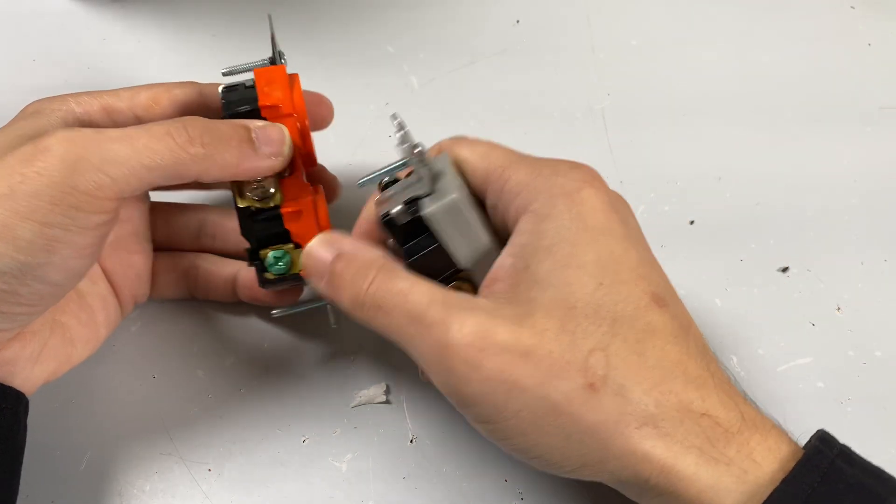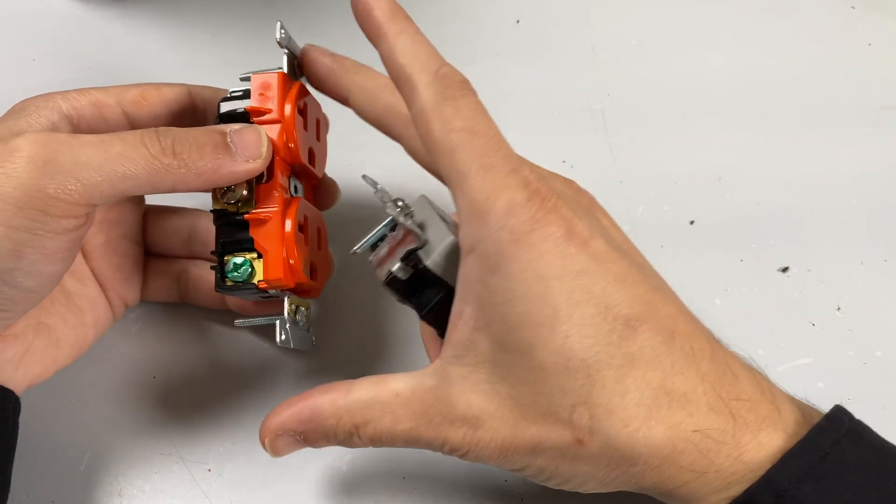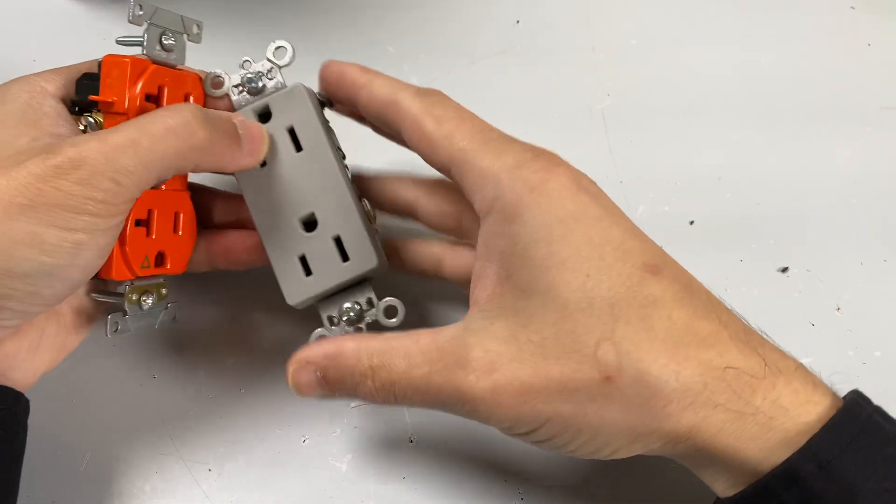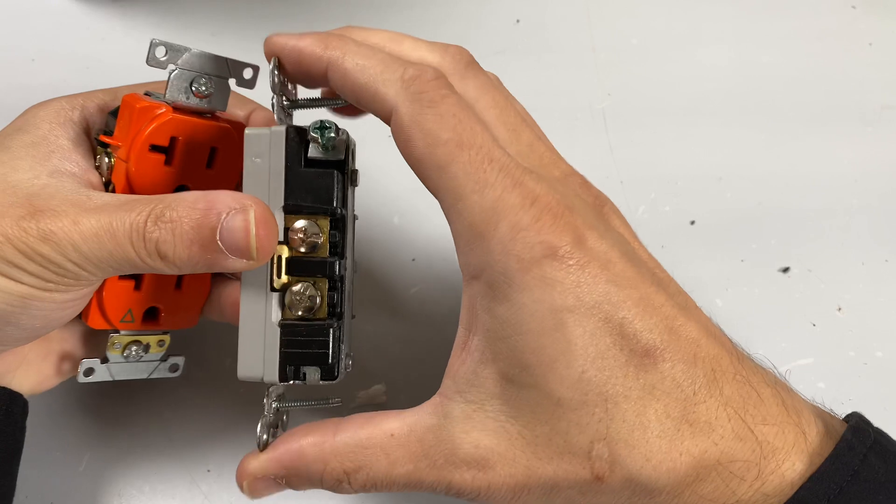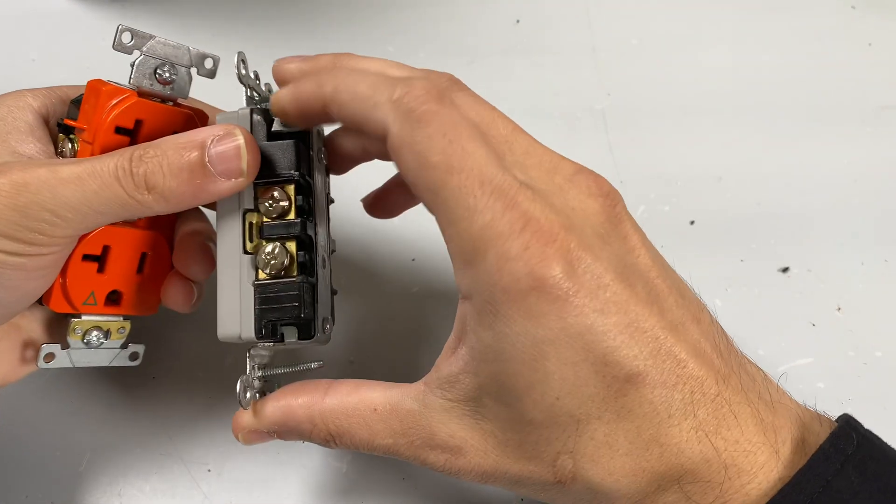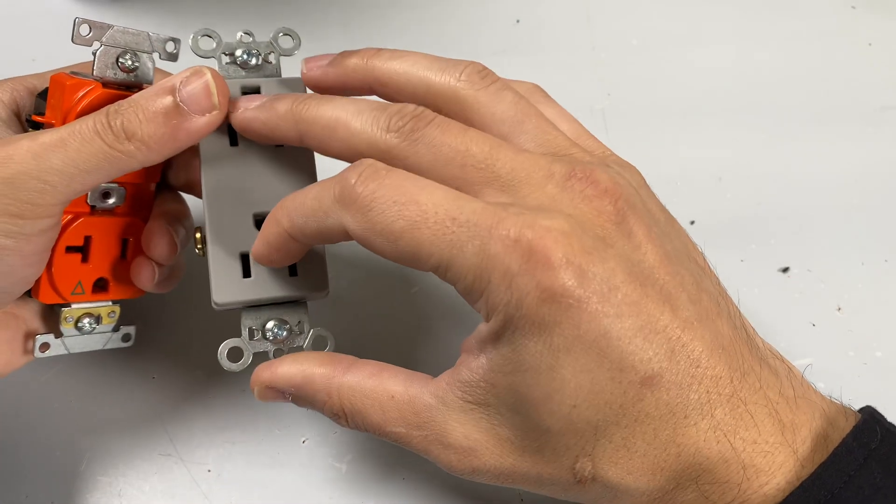The ground screw isolates the duplex portion from the chassis. And in our standard outlet, this is just tapped in. This chassis that my hand is on right here is the same as this, and this wires to the ground pin.